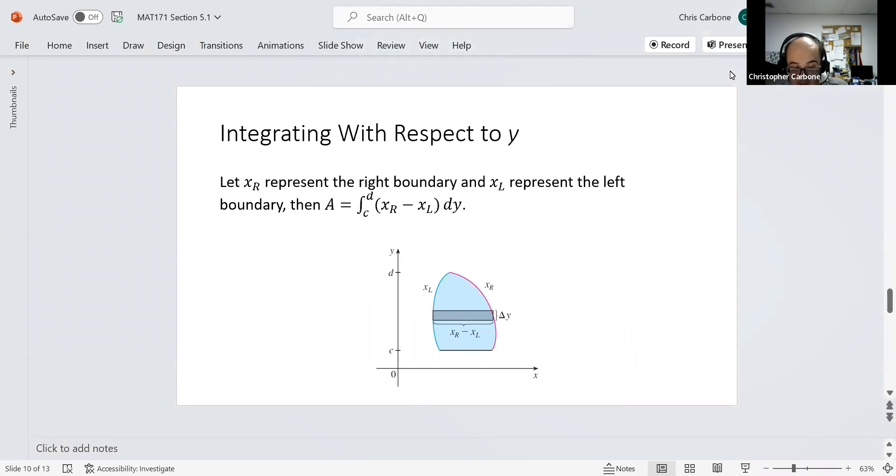In order for us to actually integrate, we let x sub R represent the right boundary, which in this case is our function x equals f of y, and x sub L represents the left boundary, which was x equals g of y. Then the area is just the integral from c to d of the right boundary minus the left boundary dy.